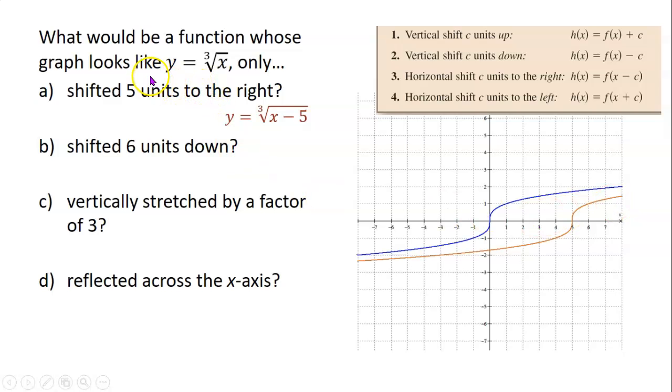Part b: what would be the function whose graph looks like y equals the cube root of x only shifted six units down? To shift the graph down we need to subtract that number from the end. So that means it's y equals the cube root of x minus 6. Notice the minus 6 is not under the radical sign. First you take the cube root of x, then you subtract six from that.